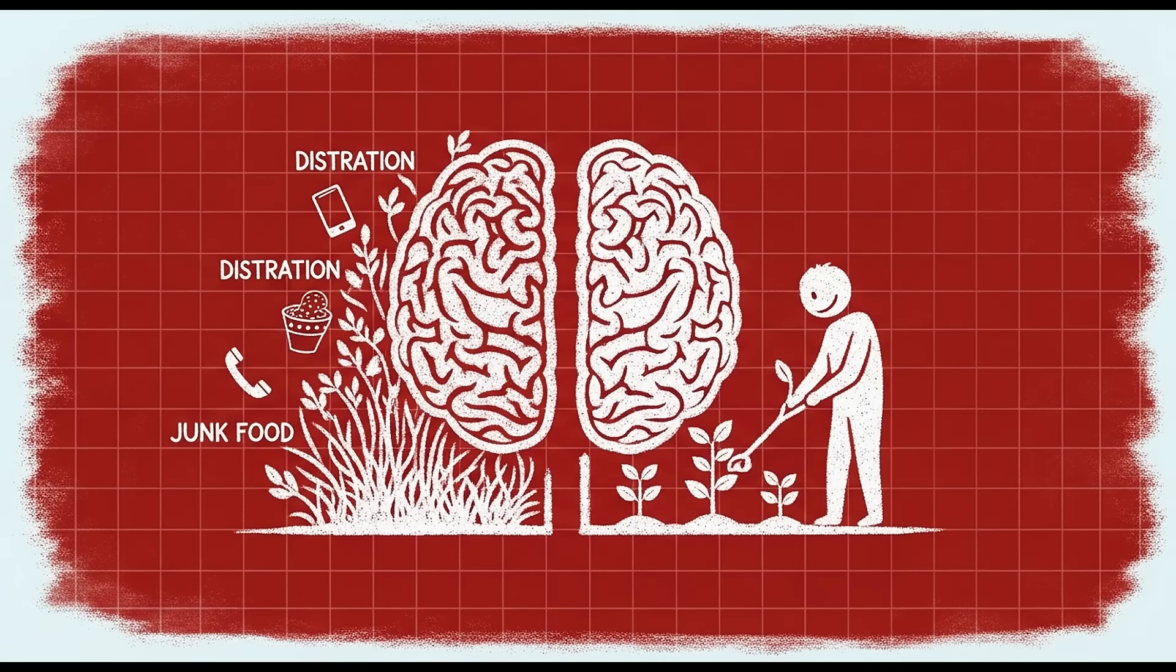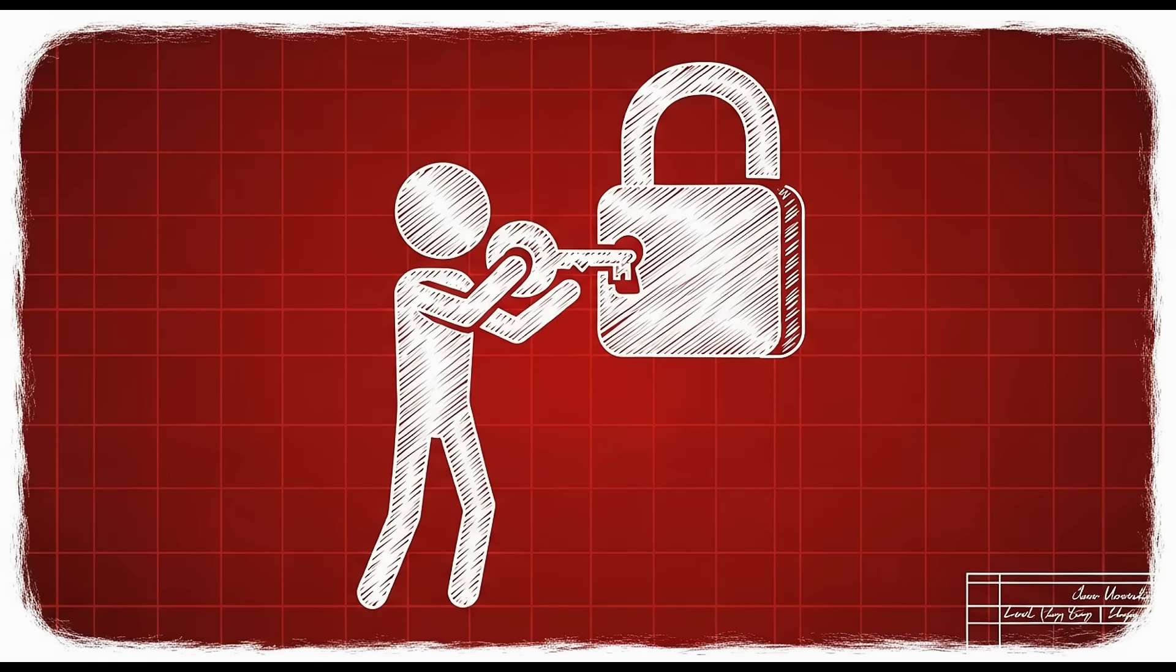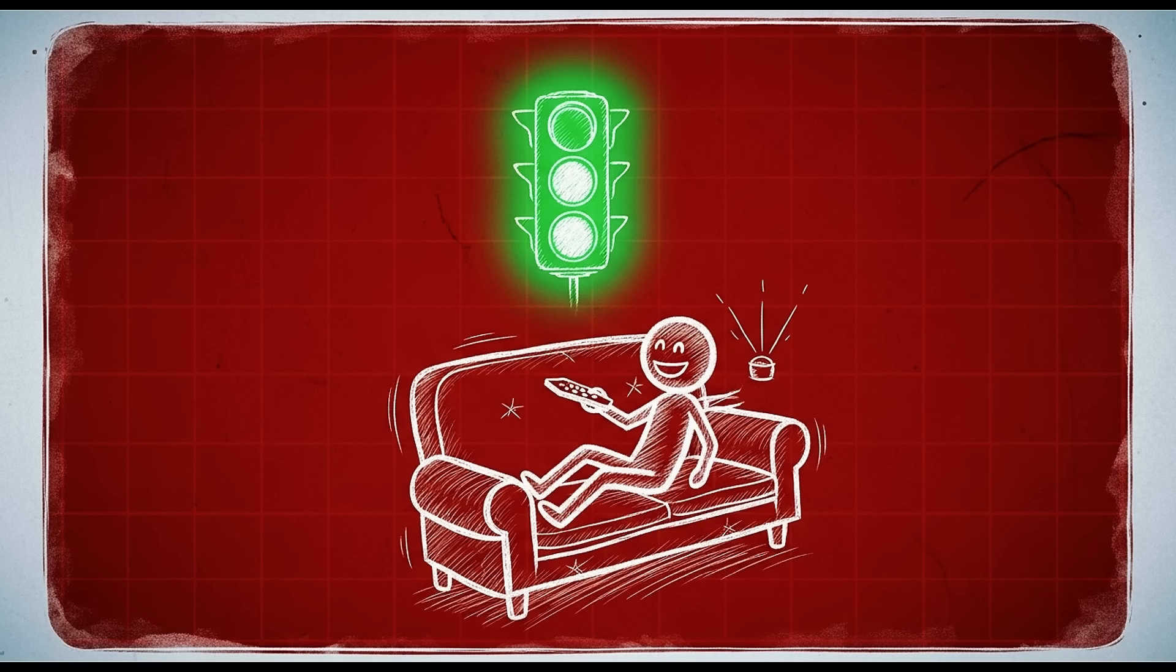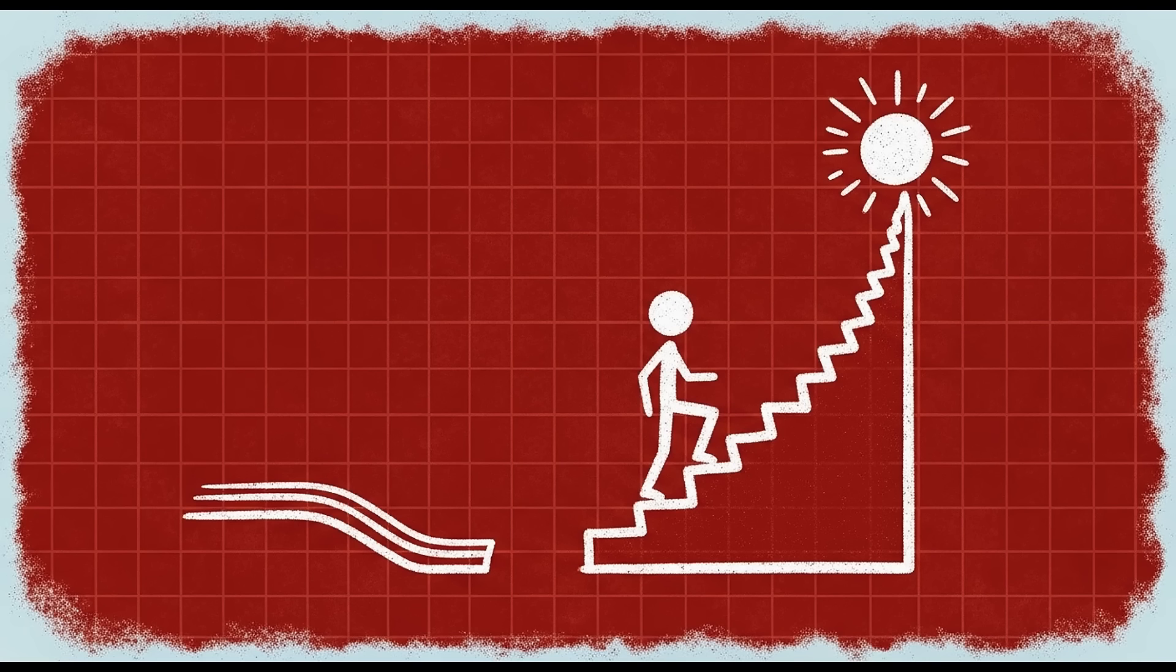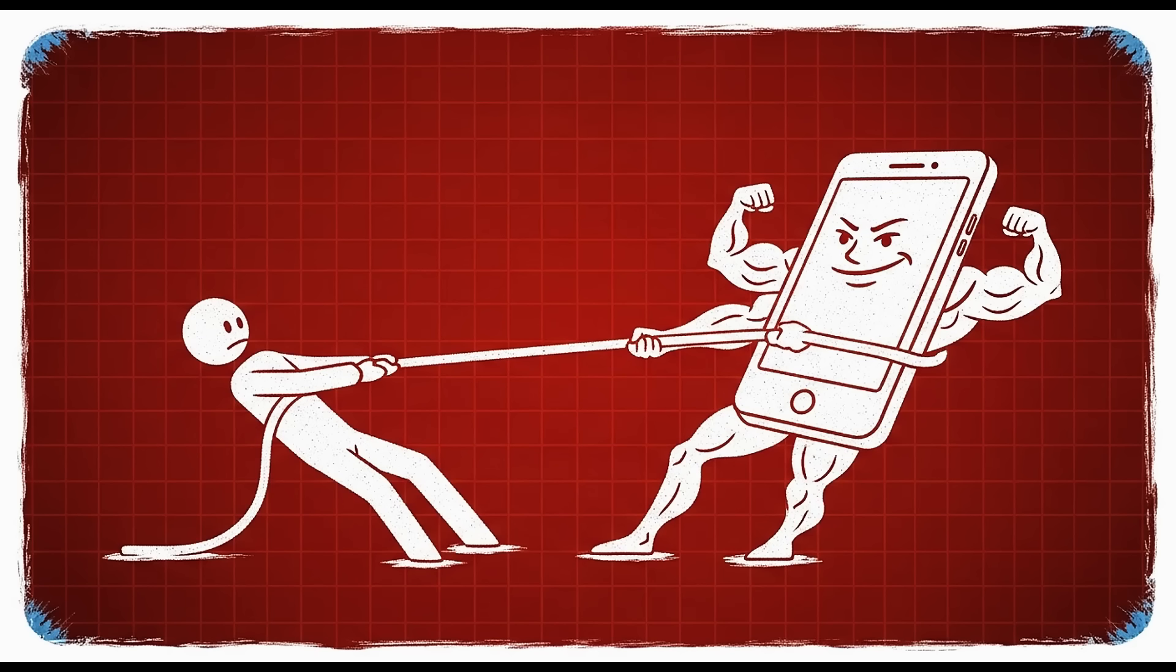This is where environment design becomes crucial. If your phone is next to your bed, you'll check it first thing in the morning. If healthy food is prepared and visible, you'll eat it. If your workout clothes are laid out, you'll work out. You can't rely on willpower when your environment is sabotaging you.